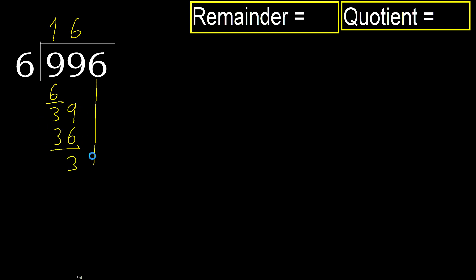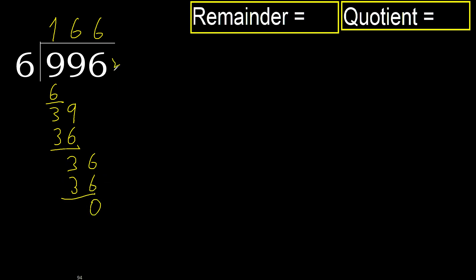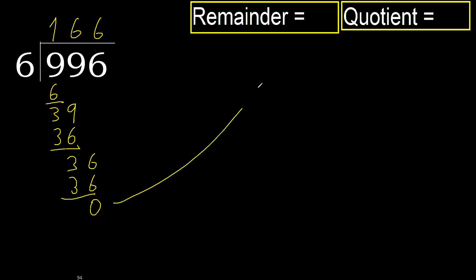Next: 36. 6 multiply by 6 is 36. Subtract. Next — there is no number, therefore finish it.